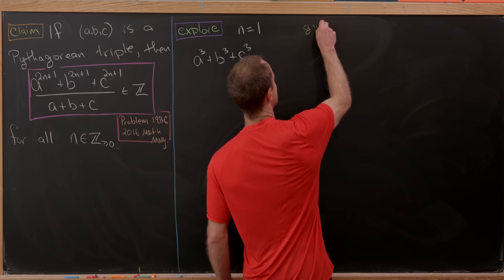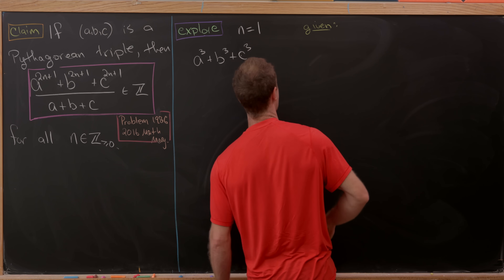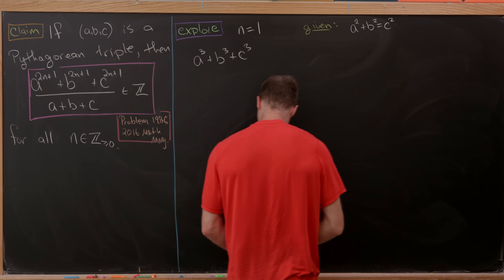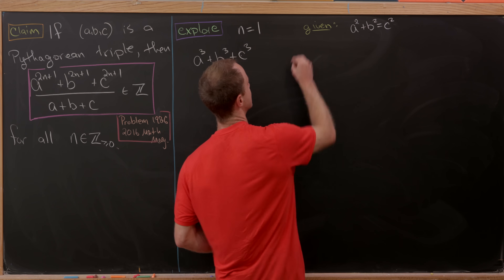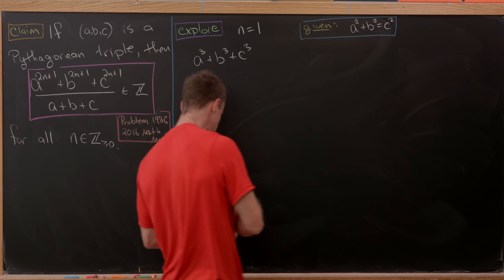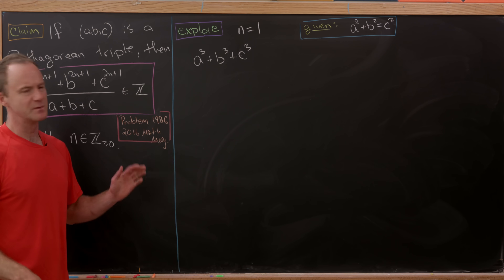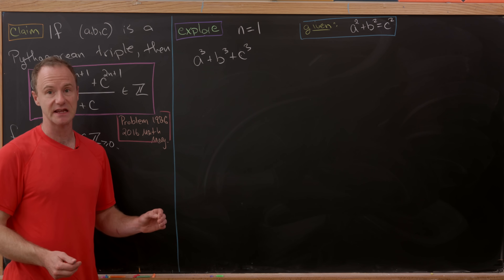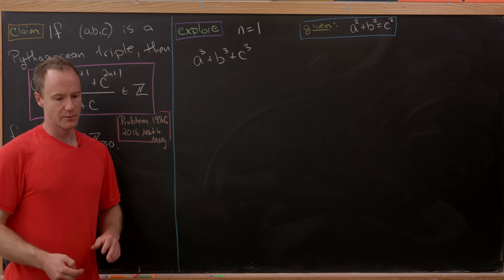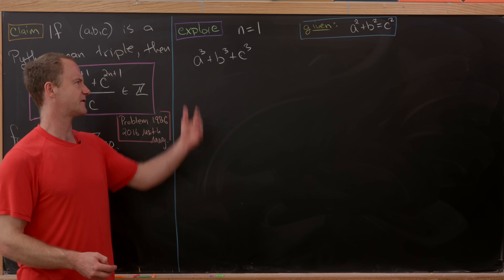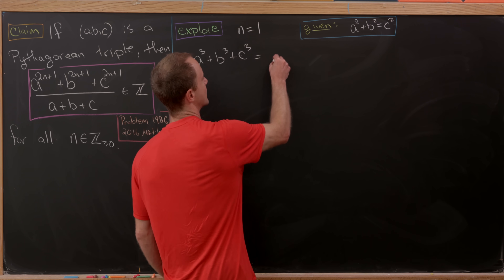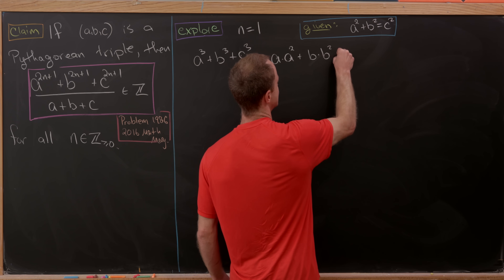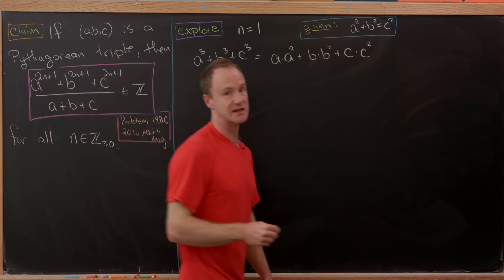We want to see if we can manipulate a³ + b³ + c³ so that it's an obvious multiple of a + b + c. We have the given from the Pythagorean triple: a squared plus b squared equals c squared. The best way to use that is to take c cubed and factor it as c times c squared, and similarly factor the first two terms. So we write this as a times a squared plus b times b squared plus c times c squared.